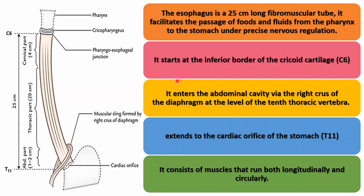The esophagus is a 25 cm long fibromuscular tube that facilitates the passage of foods and fluids from the pharynx to the stomach under precise nervous regulation. It starts at the inferior border of the cricoid cartilage at the level of C6, enters the abdominal cavity via the right crus of the diaphragm at the level of T10, and extends to the cardiac orifice of the stomach at the level of T11. It consists of muscles that run both longitudinally and circularly.